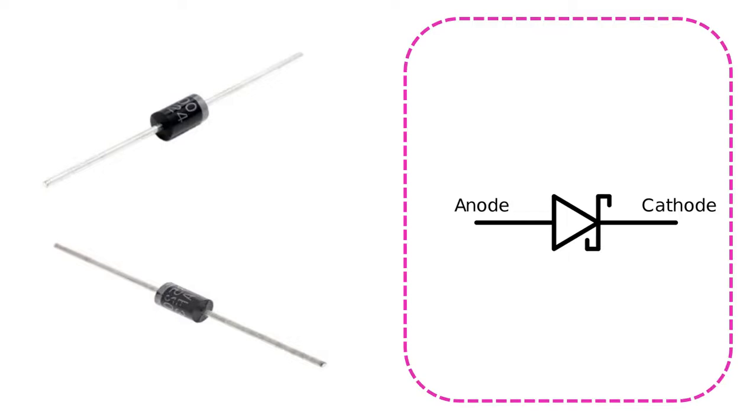Schottky diodes are used in computers, RF, and rectifier applications operating at high frequencies, which need high switching speed to respond to rapid changes in the direction of the current. While the voltage required for a normal silicon diode to flow current is about 0.7V, this value is around 0.3 volts in these diodes. The symbol is like this.